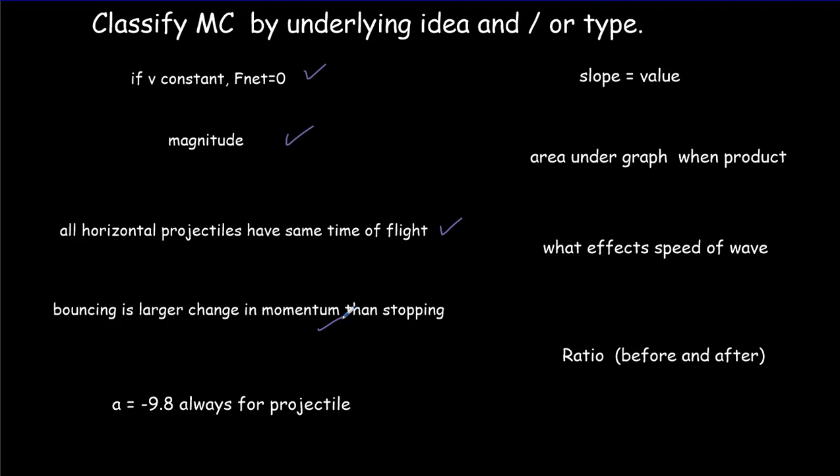The idea that when objects bounce, there's a bigger change in momentum, a bigger impulse than if they just come to a stop. The idea that the acceleration of a projectile is negative 9.8 downwards on the way up, on the way down, and at the top. The same all the time.